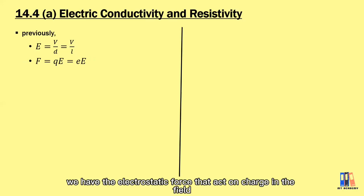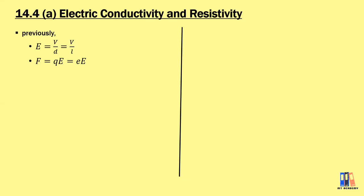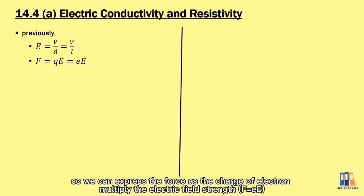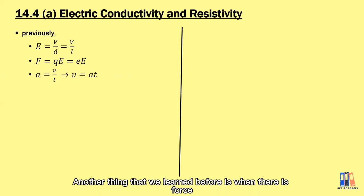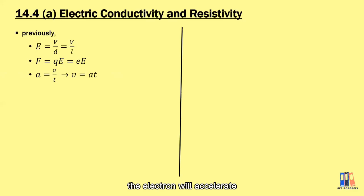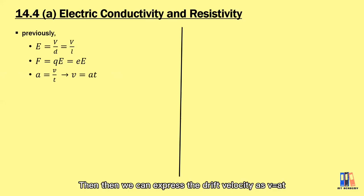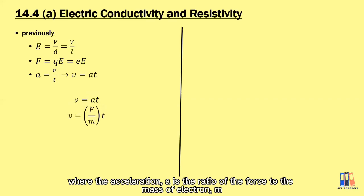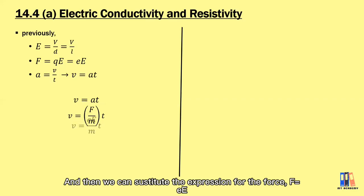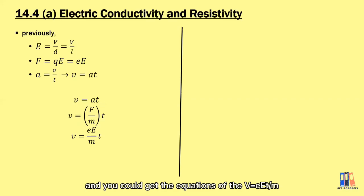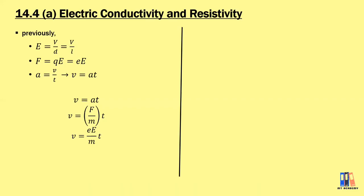When there is an electric field, we have the electrostatic force that acts on the charge in the field. The force is defined as qE, and since we are talking about the electron, we can express the force as the charge of the electron multiplied by the electric field strength. When there is a force, the electron will accelerate. We can express the drift velocity as At, and further derive it where the acceleration is the ratio of the force to the mass of the electron.